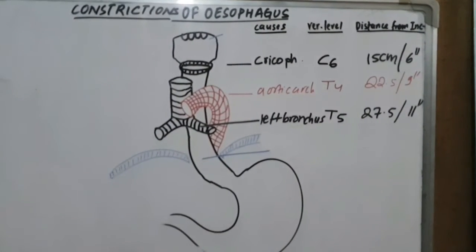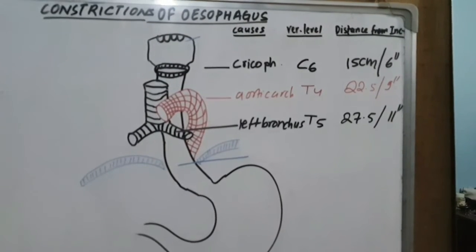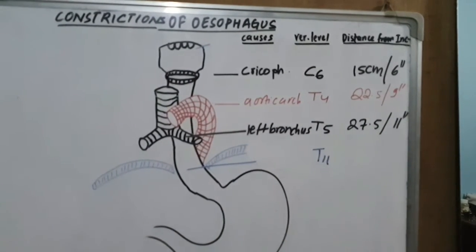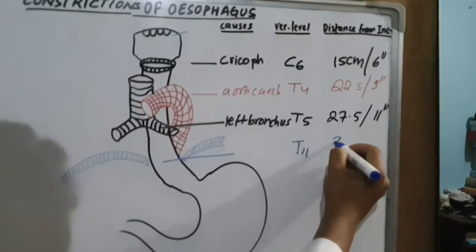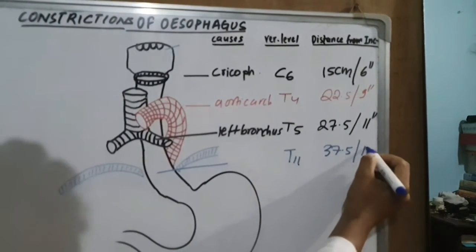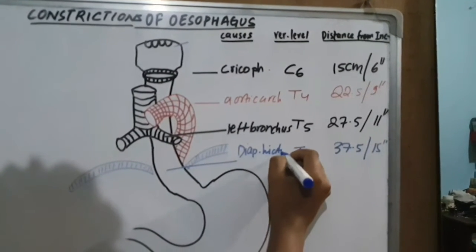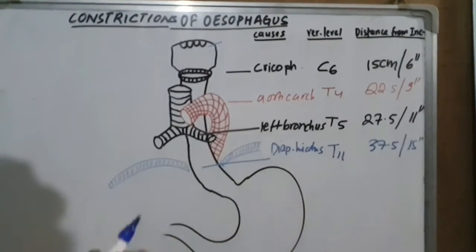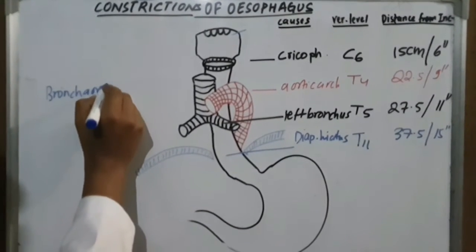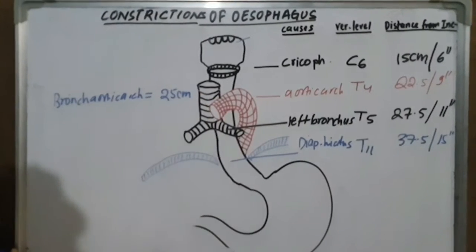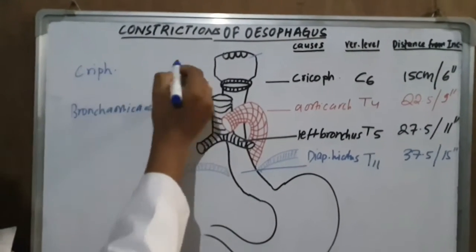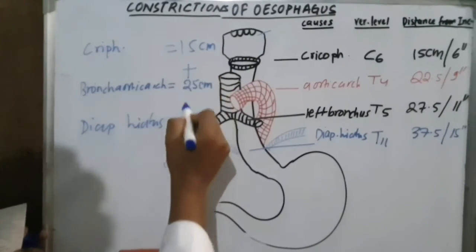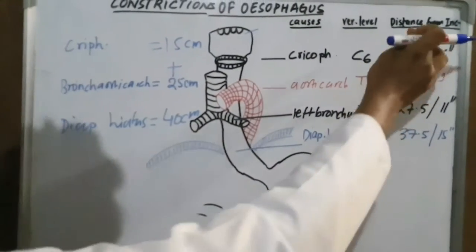The fourth constriction is at the diaphragmatic hiatus. In general, the aortic arch and bronchus constrictions are taken together at 25 centimeters, the cricopharyngeus at 15 centimeters, and adding these two gives 40 centimeters for the diaphragmatic hiatus. These constrictions and distances from the incisors are clinically important.